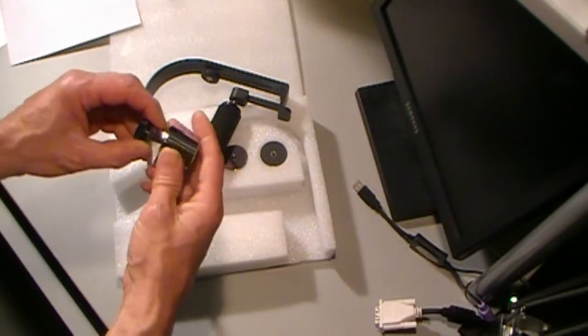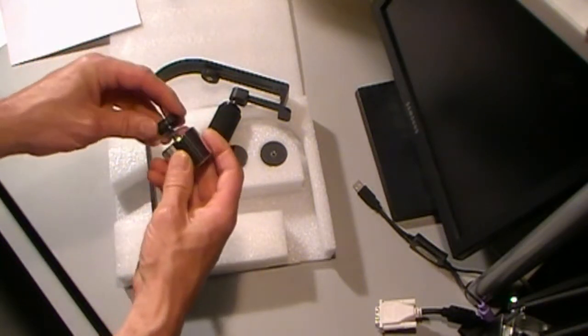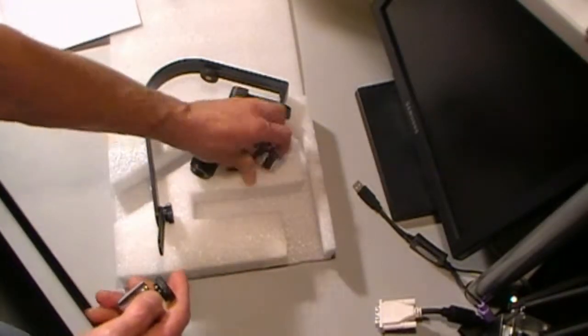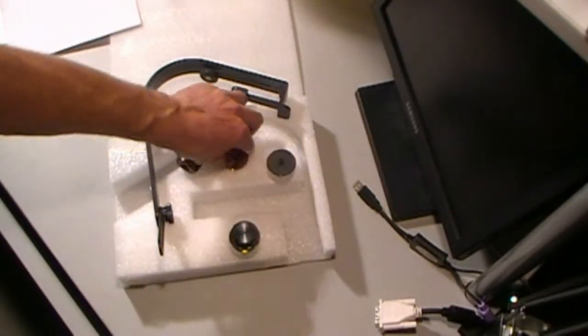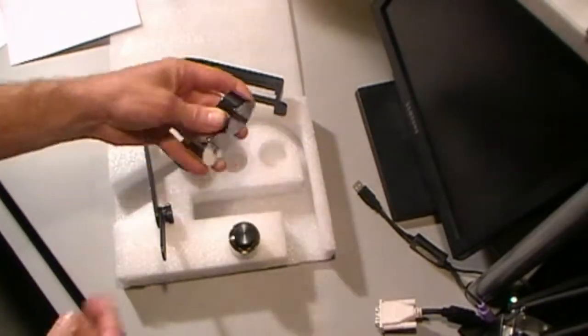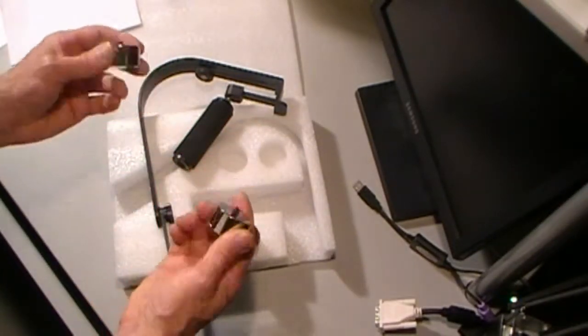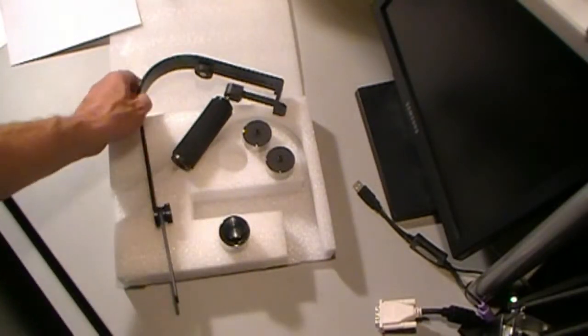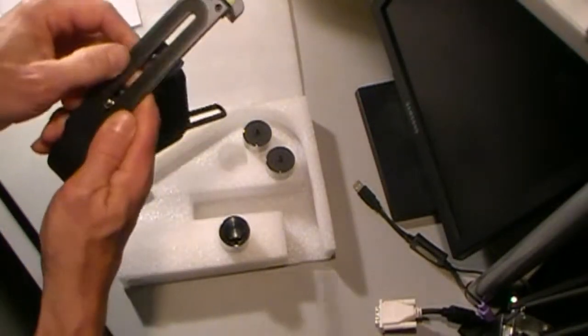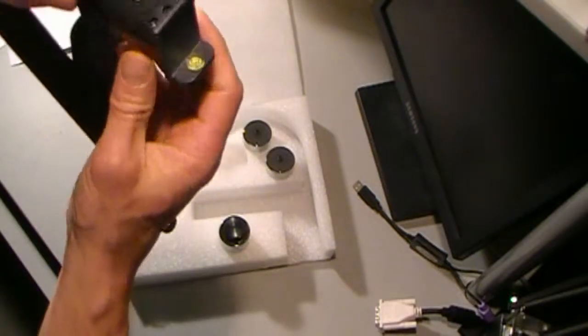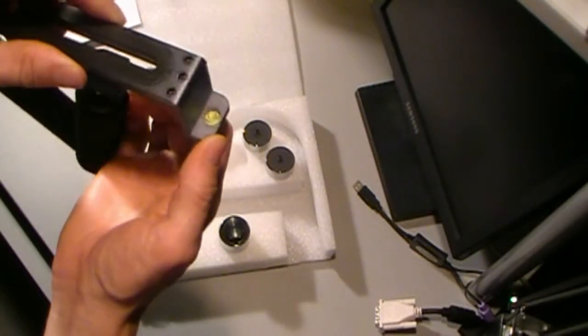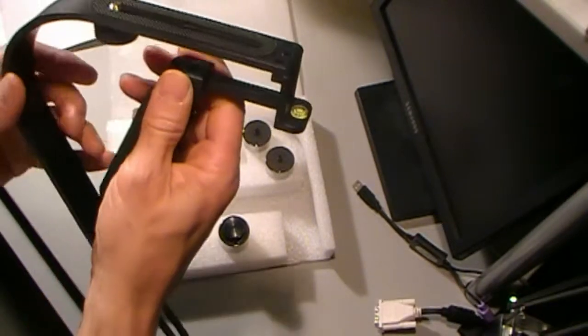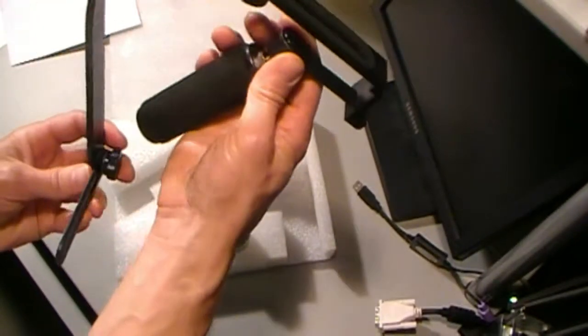Plastic washers, a couple plastic washers in there. That's pretty much it. I mean, it's got a rubber mount up here. Here's your level. Pretty basic piece of equipment.